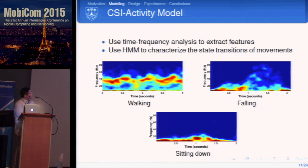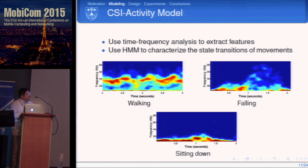For walking, there is a high-energy band with nearly constant speed. For falling down, the person is initially quite static, then quickly speeds up, then returns to static in less than half a second. From this pattern we can tell the person is possibly falling down.